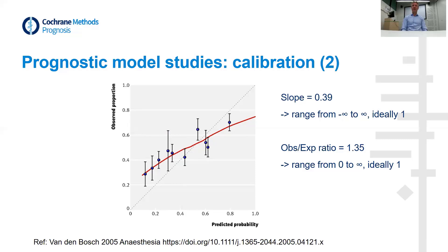However, the calibration slope can take values between minus infinity to plus infinity. In this figure, the calibration slope had a value of 0.39. Values below 1 indicate the prediction model is overfitted, meaning that low predicted probabilities are too low on the left side and high predicted probabilities are too high on the right side, compared to the true outcome frequencies. If we calculate the overall observed versus expected outcome ratio based on these results, the authors found a value of 1.35. This means that, on average, the predicted outcome risk is 0.35 times lower compared to the observed outcome frequency — so, on average, the model underestimates the true probability of the outcome.